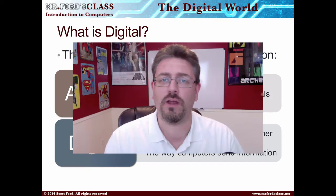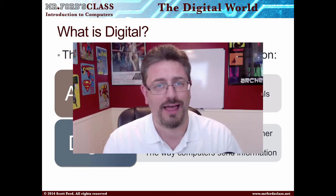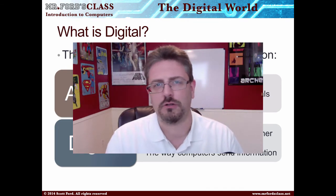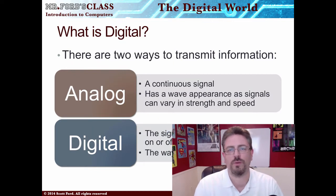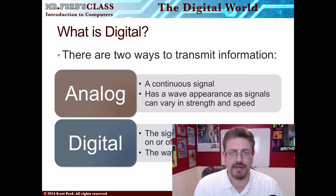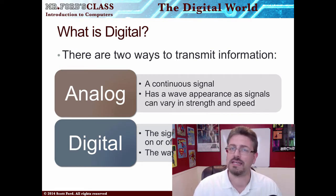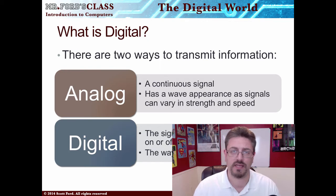Hi and welcome back. In this video we're going to take a look at what digital means, because we throw it around an awful lot in the world of technology. Basically digital is all about a signal. There are two basic ways we can transmit information: analog and digital. Analog is a continuous signal — it has a wave appearance, as signals can vary in either strength or speed. We can either make them more powerful or we can speed them up.